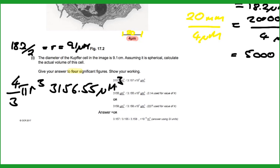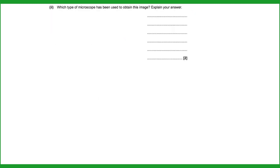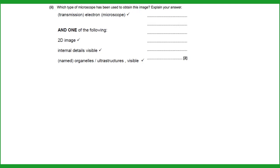The microscope used for this image was a transmission electron microscope. The justification: magnification of 5,000× with high resolution and clarity, a black and white two-dimensional image in which individual organelles are visible. You cannot see depth or a three-dimensional image — all features consistent with a transmission electron microscope.